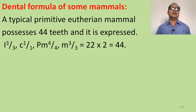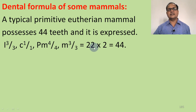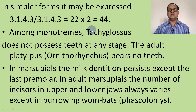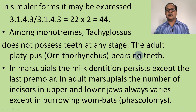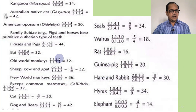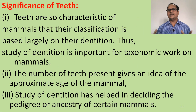Regarding the dental formula: incisors, canines, premolars, and molars are expressed as numbers showing how many of each are present. This is the dental formula for a typical primitive eutherian mammal. Among monotremes, Tachyglossus does not possess teeth, and Ornithorhynchus has no teeth in its mouth. Various dental formulas for different mammals can be expressed in this simplified form.